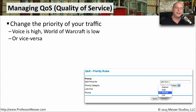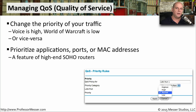On many networks, every application has exactly the same priority as every other application. But applications have different priorities to us — we may want to allow voice over IP traffic to have a higher priority than gaming traffic. Many wireless routers have a quality of service, or QoS, configuration setting that allows you to determine what traffic gets a higher or lower priority on your network. This is often a function found in higher-end SOHO wireless routers, and it allows you to set quality of service based on the MAC address or IP address of a device, a port number, or the application going over the network.